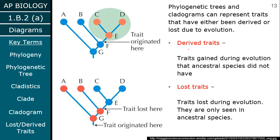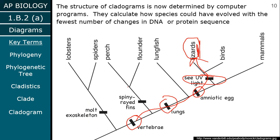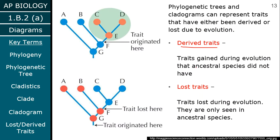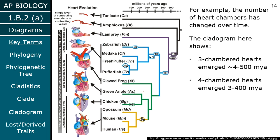Here we have two different terms. Derived traits are traits that are gained during evolution — all the traits that have evolved somewhere on the tree. For example, amniotic egg is a derived characteristic. Lost traits are traits that get lost during evolution — something older organisms have but that was lost at a certain point. For instance, tails are present in our ancestors but we no longer have tails. We have the remnants of a tail but not a tail — that would be a lost trait in our lineage.